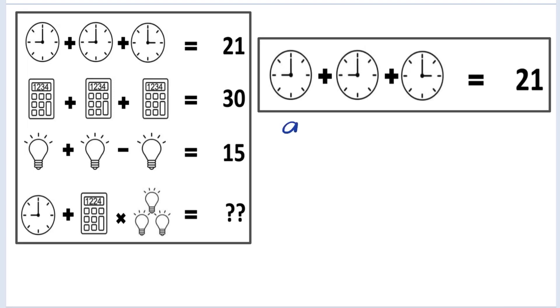The first is 9 o'clock, the second is 9 o'clock as well, and the third is 3 o'clock. So 9 plus 9 plus 3 is equal to 21.